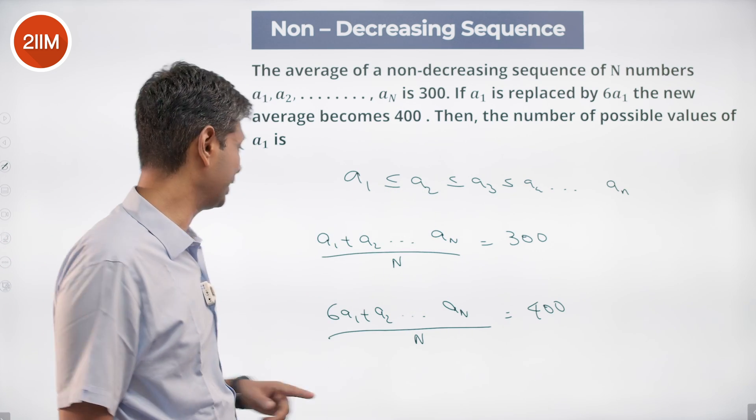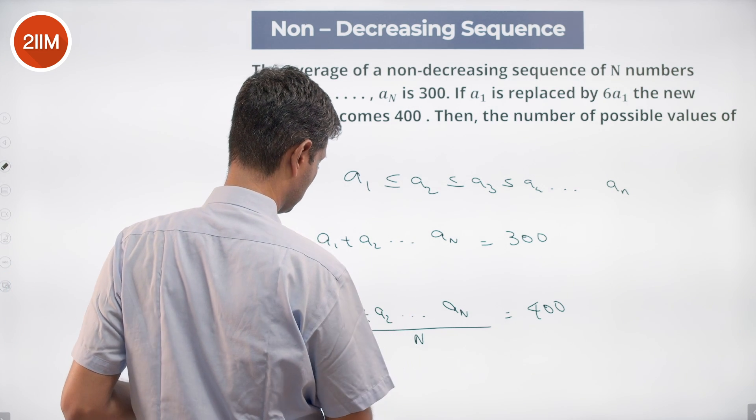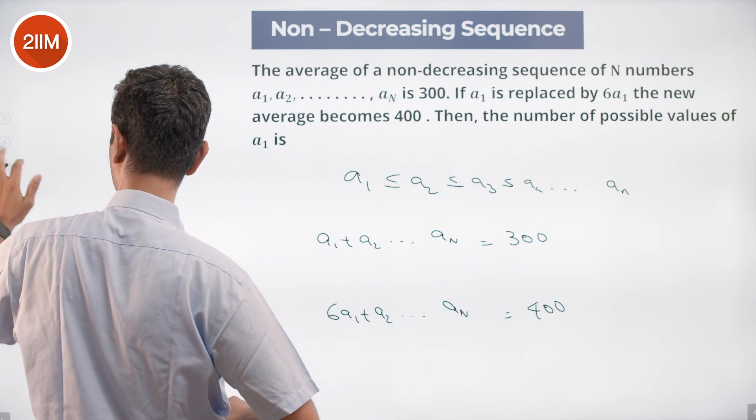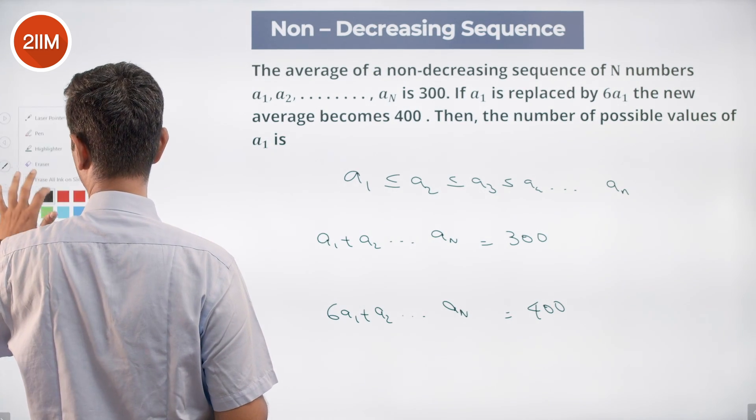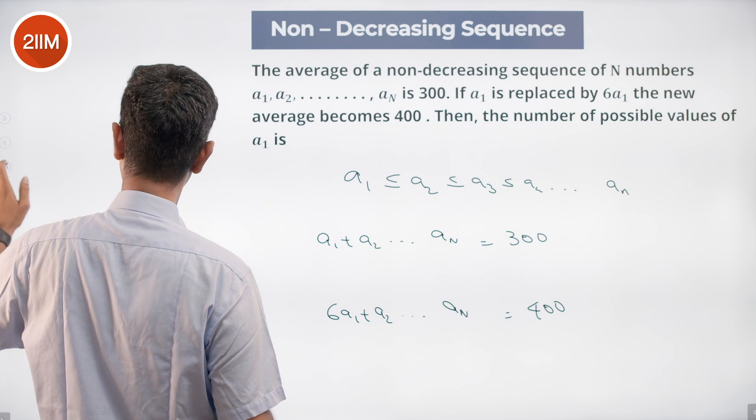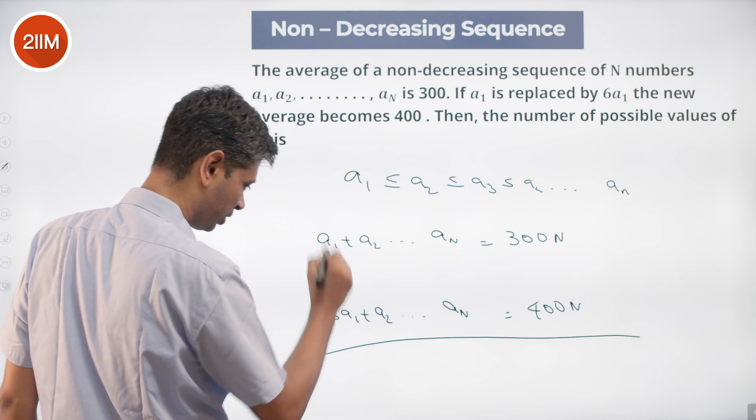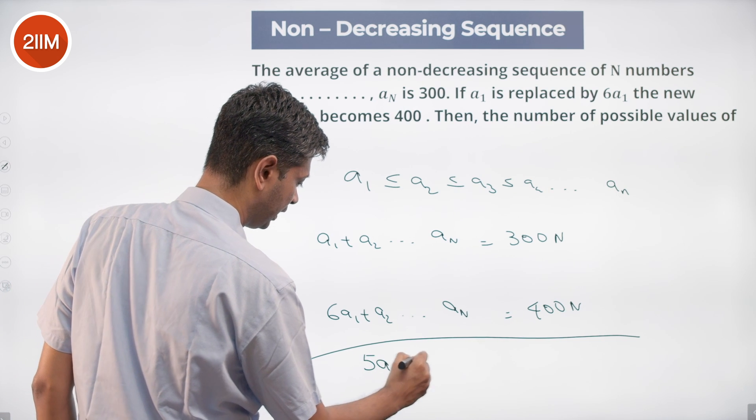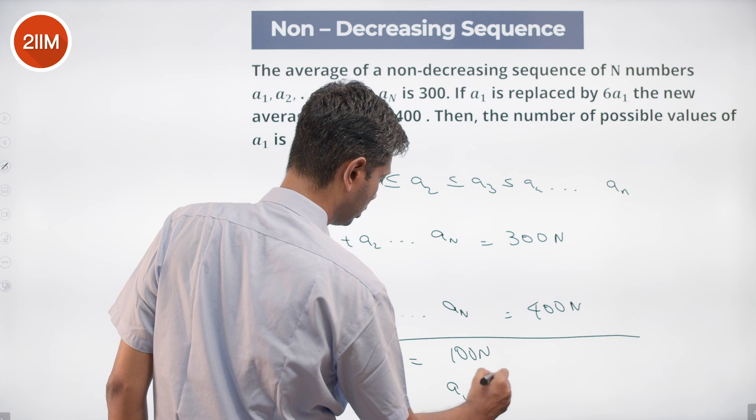a₁ + a₂ + ... + aₙ = 300N. We'll rewrite it like this. This is 300 times N. This is 400N. If we subtract one from the other, we have 5a₁ = 100N, or a₁ is 20 times N.